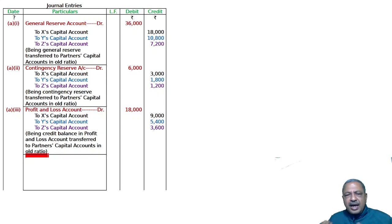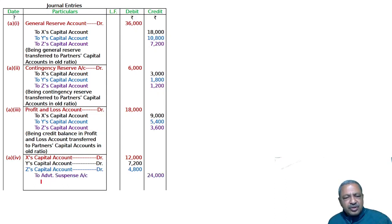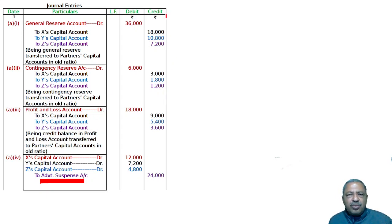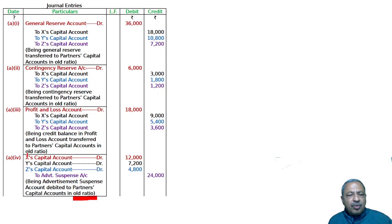For the asset side, the entry is reversed: XYZ capital accounts are debited individually to advertisement suspense account (also called deferred advertisement account) for $24,000, distributed in old ratio. Narration: being advertisement expenses account debited, transferred to partners capital accounts in old ratio.